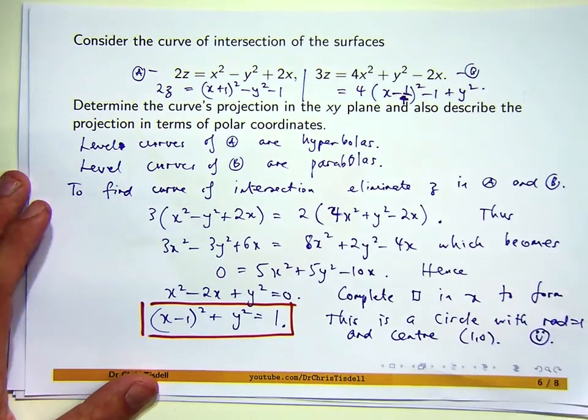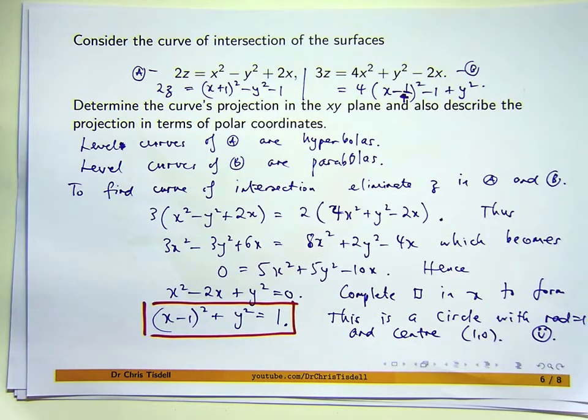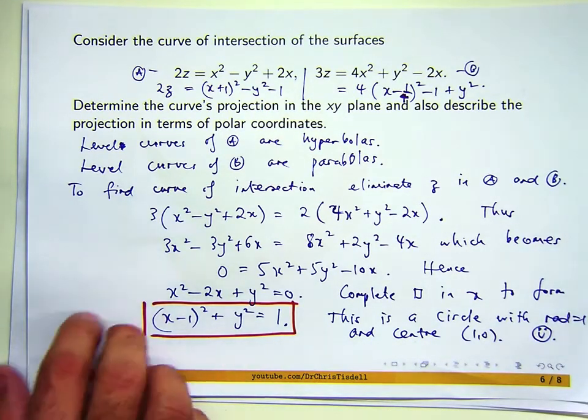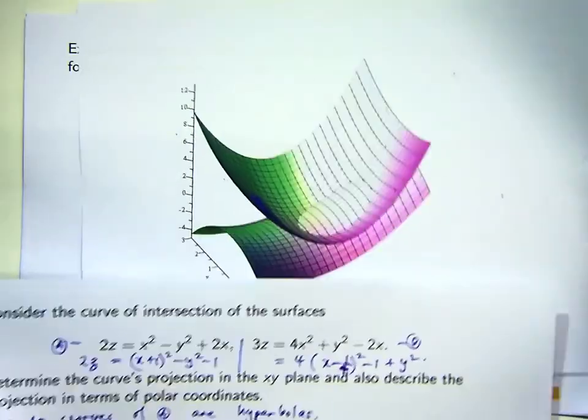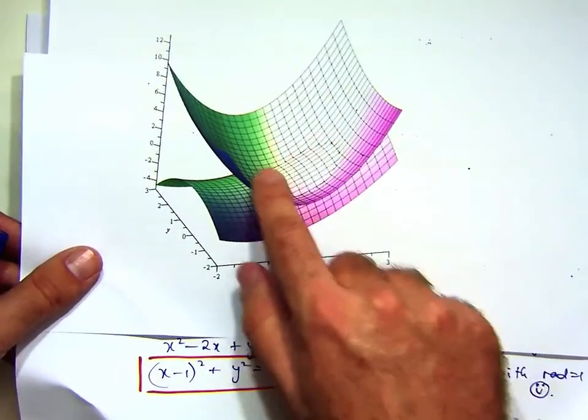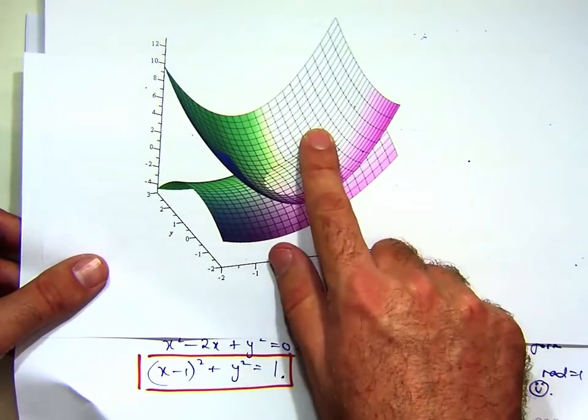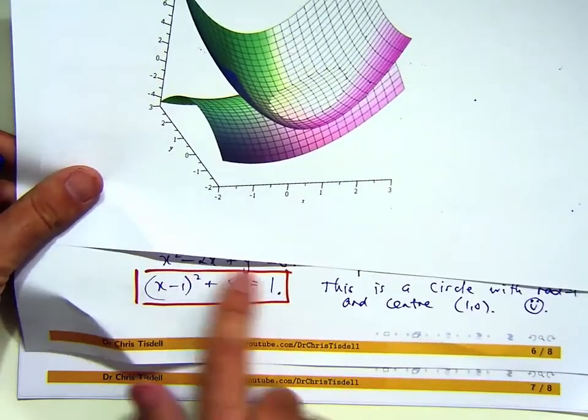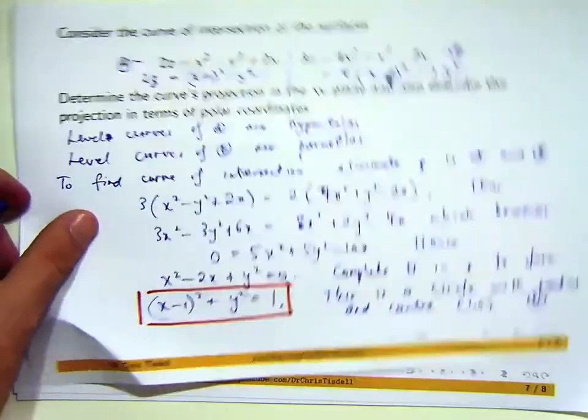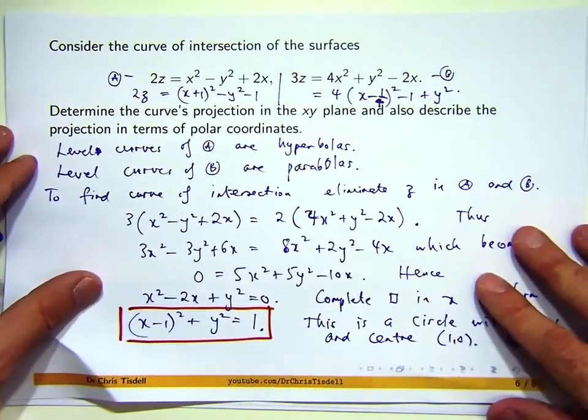What would be the projection of this in the xy plane? Well, it's the same. It's the same curve, just the circle that lies in the xy plane. You can see from the picture that I showed you before, this curve of intersection doesn't lie in the xy plane, but as long as we interpret this as lying in the xy plane, we've got what we wanted.